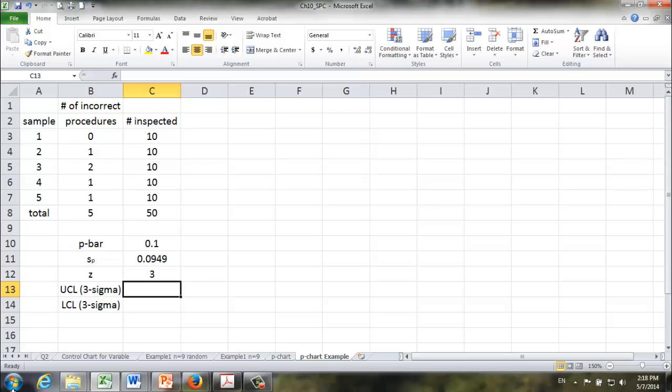Let's see how it works. The upper control limit is equal to p-bar plus z times sp. The lower control limit will be equal to p-bar minus 3 times sp.